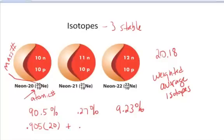0.27 divided by 100, which is 0.0027, times the mass number for neon-21, which is 21, plus 0.0923,